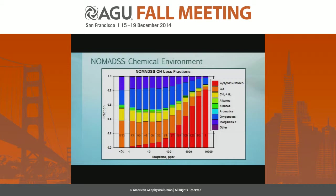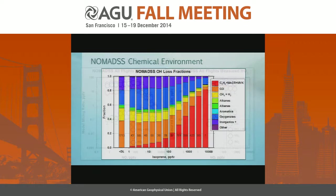Turning to NOMADS, I'll look at it in an average sense first. This shows the fraction of OH loss by various processes. The left bar is when isoprene is below the detection limit — about half the data. The rest is binned by isoprene concentration. As isoprene goes up, it becomes a larger and larger fraction of OH loss, while CO, the normal suspect, becomes less of a factor. At the same time, we're producing RO2s from those various reactions.